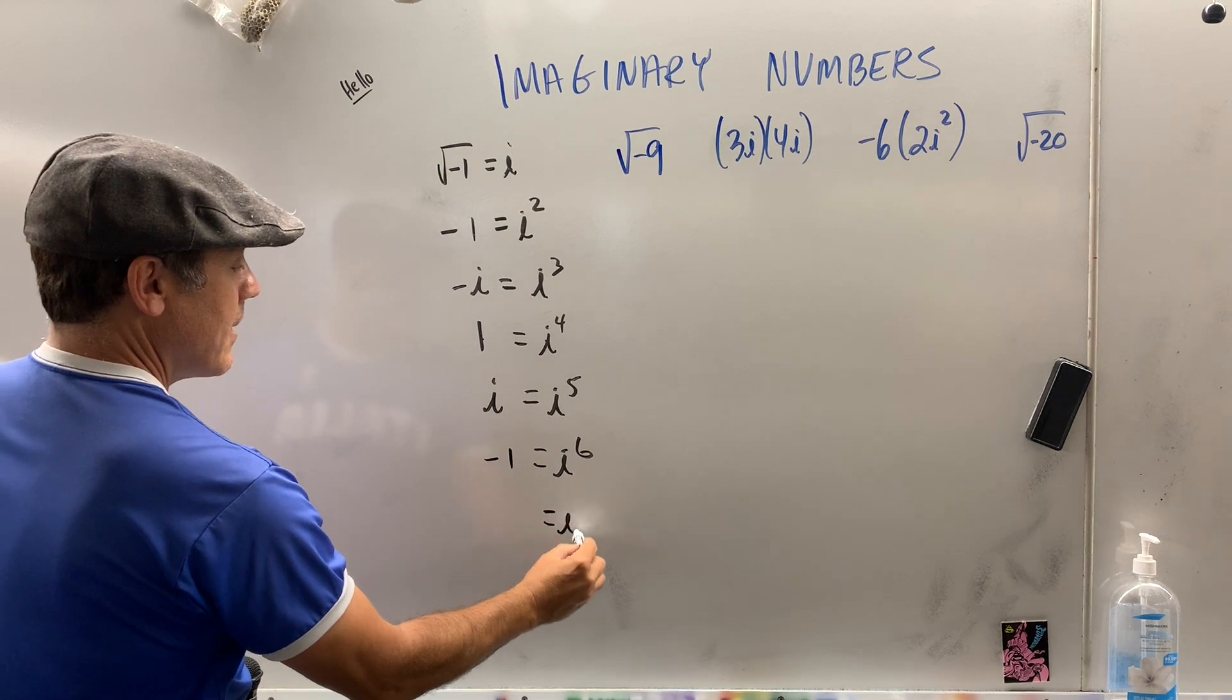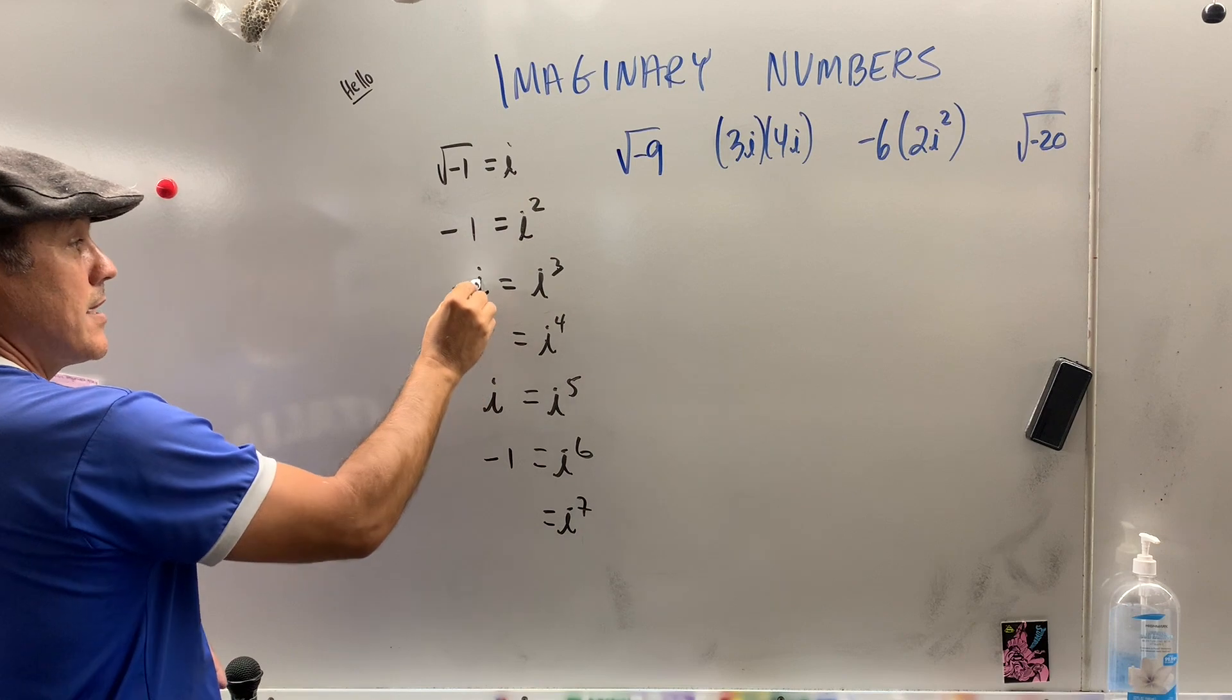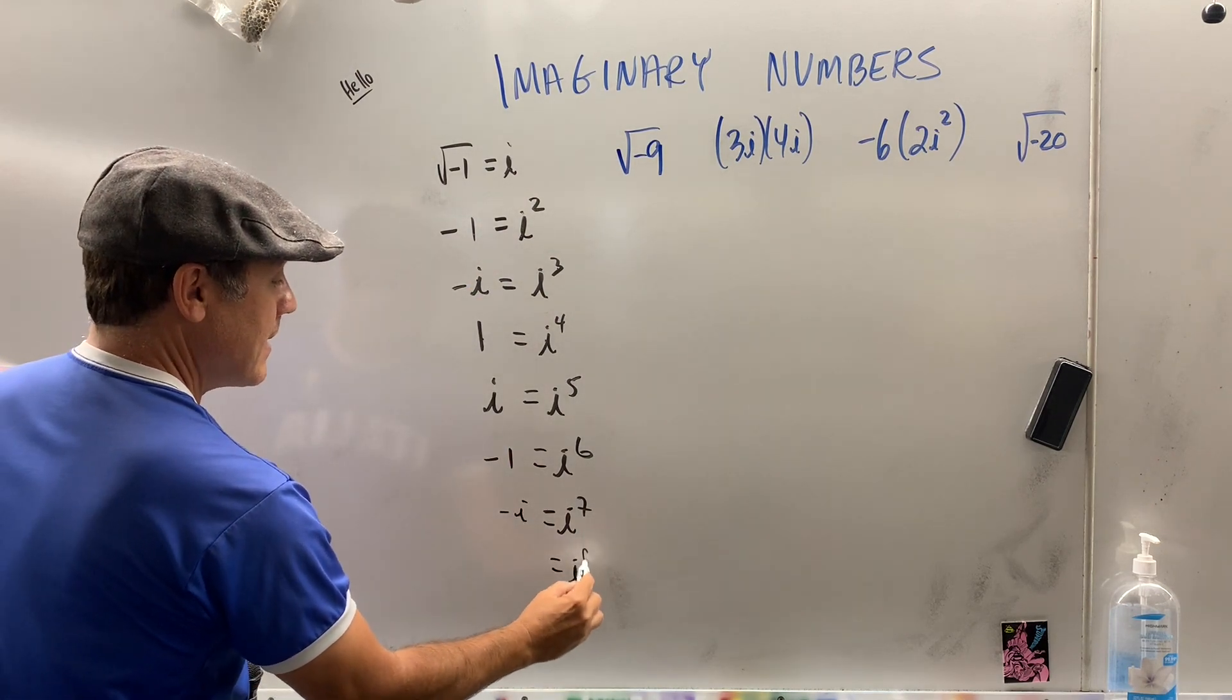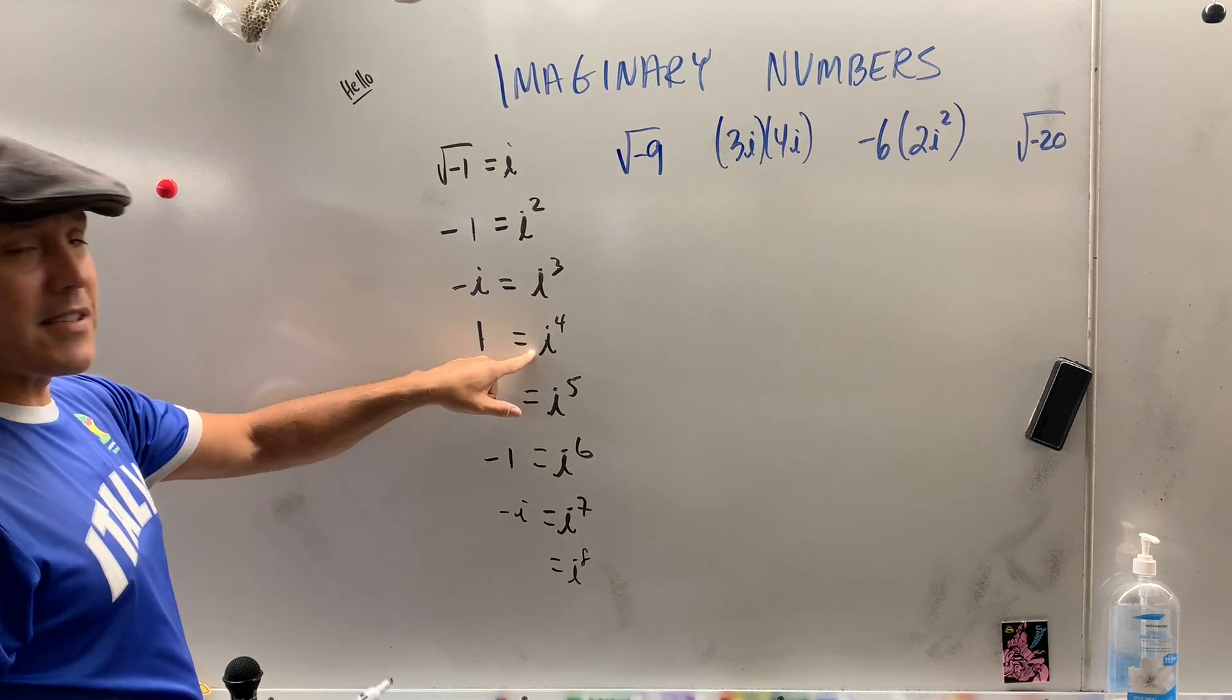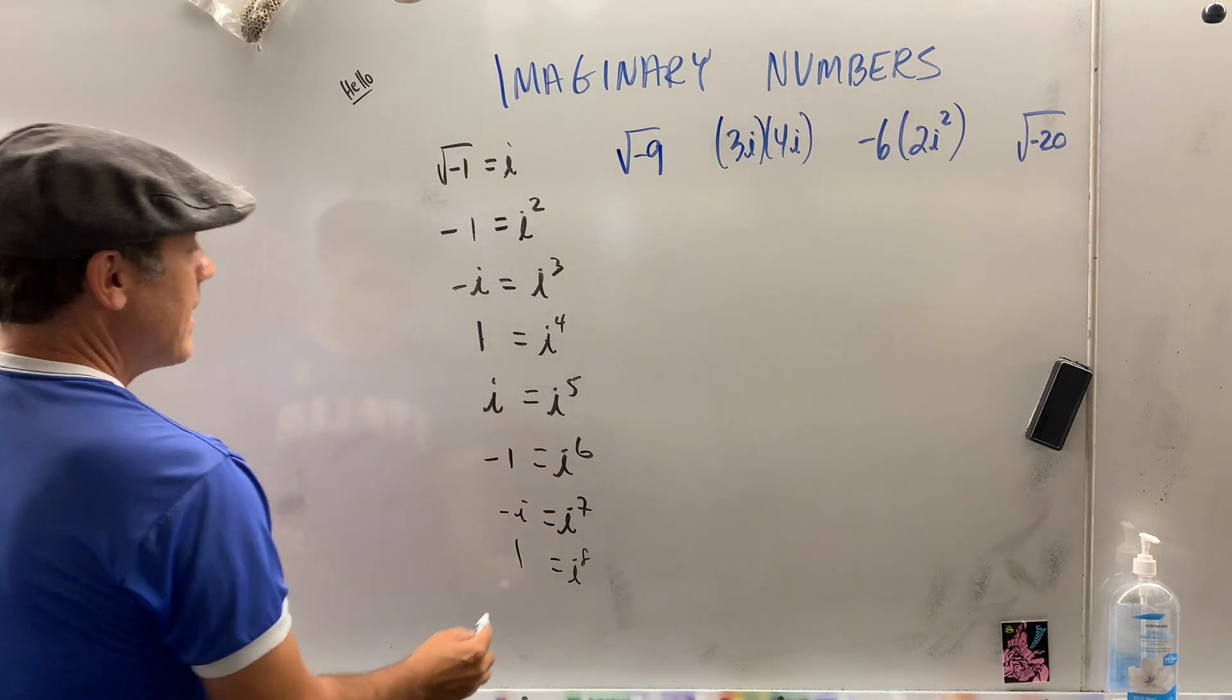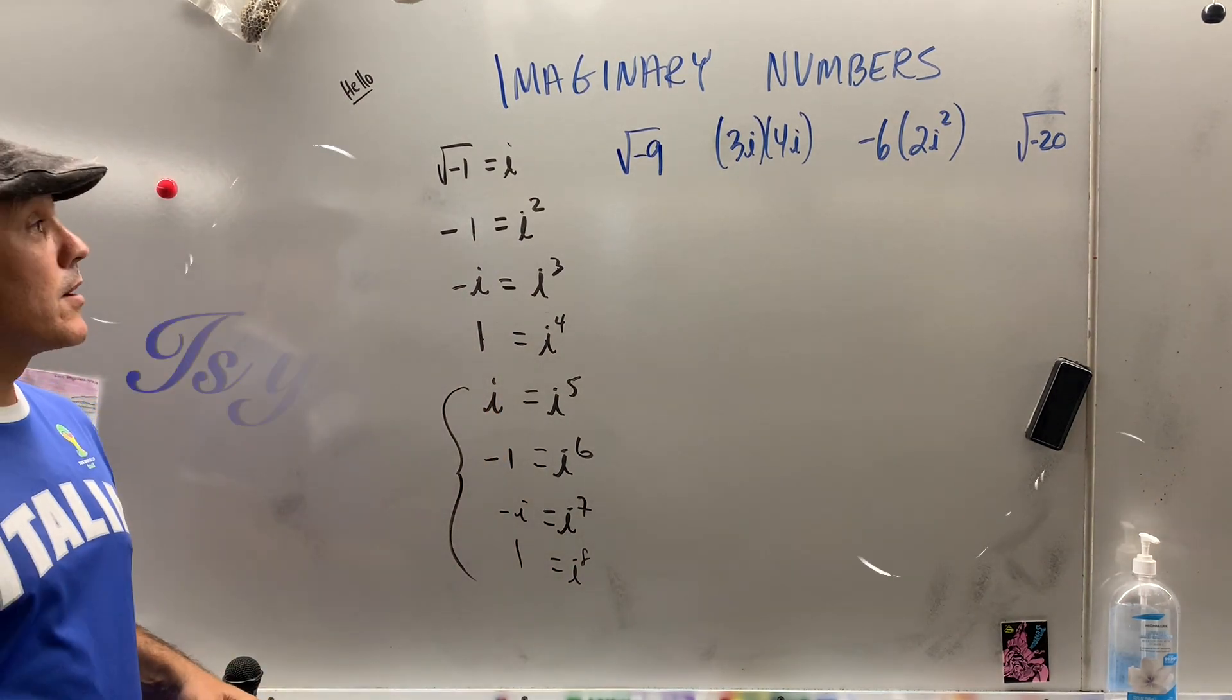I wonder, i to the seventh would be i to the fourth times i to the third, which is 1 times negative i, negative i. And then how about i to the eighth? Well, that's the same as i to the fourth times i to the fourth, so 1 times 1 is 1. And this pattern is just going to repeat itself forever.